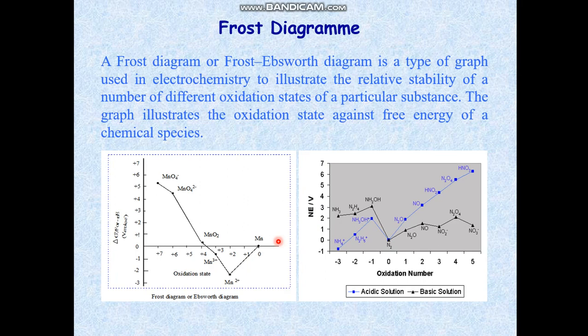Our last topic is the Frost diagram or Frost-Ebsworth diagram, which indicates the stability of different oxidation states. In the y-axis we put different free energy values and in the x-axis different oxidation states. Here manganese has several oxidation states: +7, +6, +4, +3, +2, and 0. Among all these oxidation states, Mn²⁺ is the most stable because it has the highest negative free energy value. This is the most stable and MnO₄⁻ is the least stable, which is why it has the highest oxidizing power.